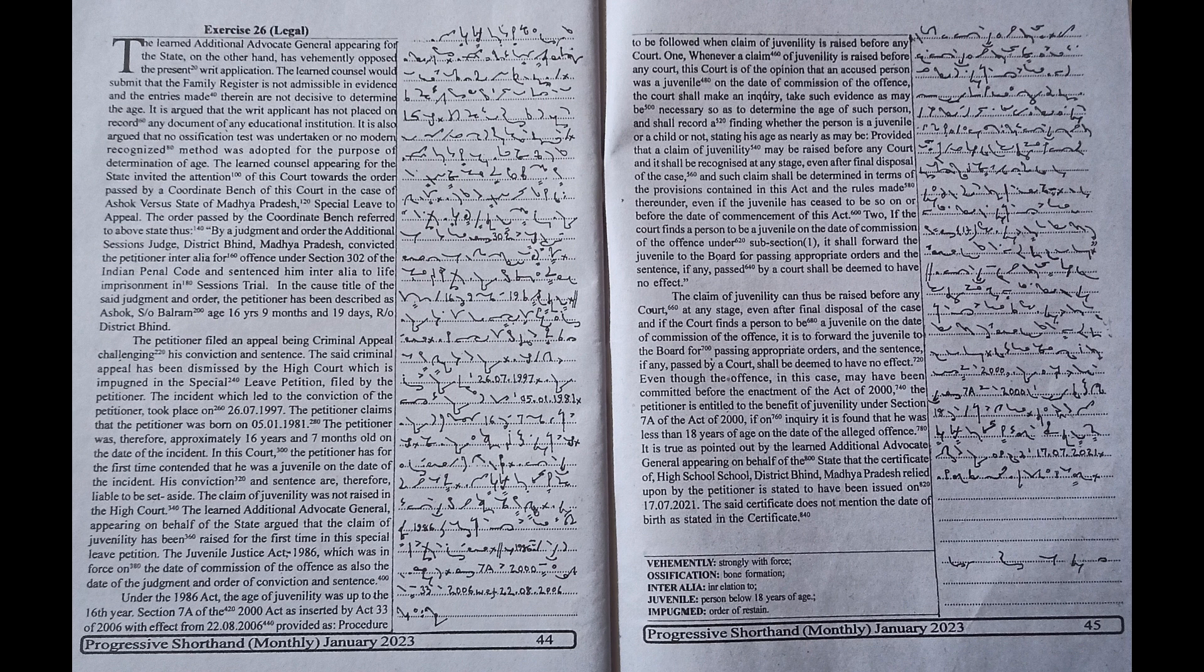It is to forward the juvenile to the board for passing appropriate orders and the sentence, if any passed by a court shall be deemed to have no effect even though the offense in this case may have been committed before the enactment of the Act of 2000. The petitioner is entitled to the benefit of juvenility under section 7A of the Act of 2000, if on inquiry it is found that he was less than 18 years of age on the date of the alleged offense.